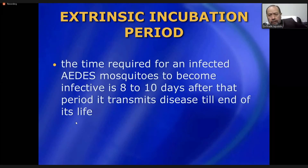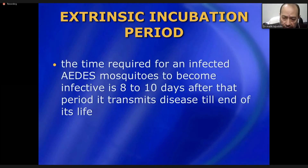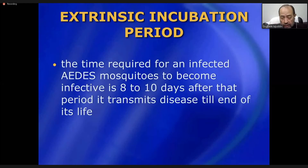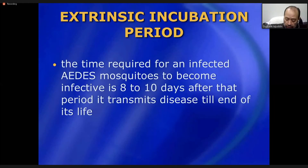After the extrinsic incubation period of 8 to 10 days, the mosquito can transmit the infection and remains infective for the rest of its life. It has also been reported that vertical transmission may occur among mosquitoes — if a female mosquito is infected with dengue virus, when it lays eggs, those eggs may already be infected. When they mature into adults, they may be infective by birth without ever biting an infected human, though studies on this are still mixed.